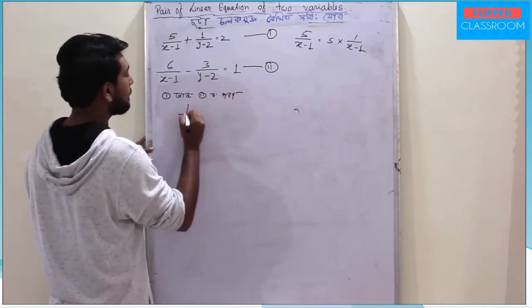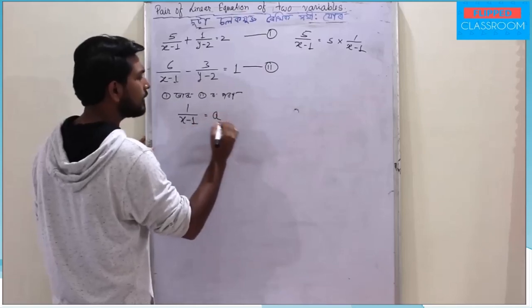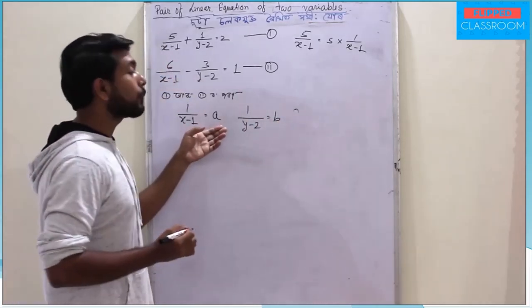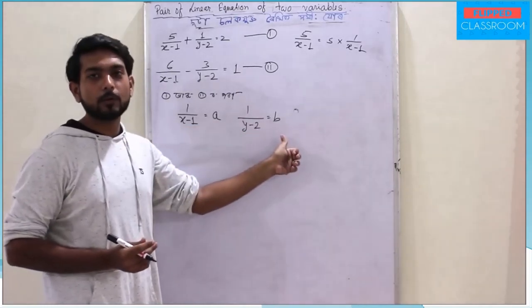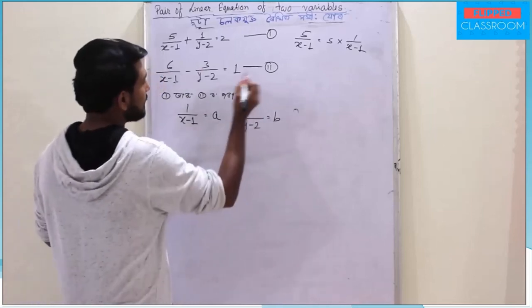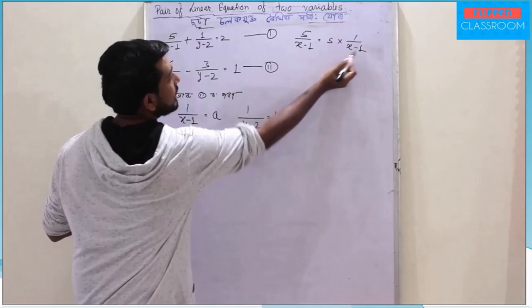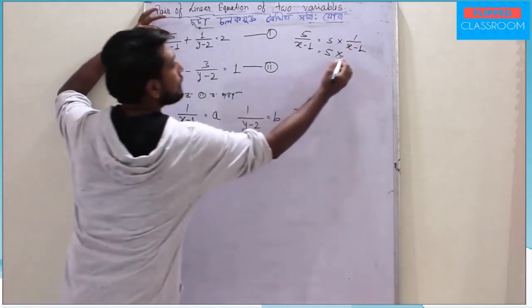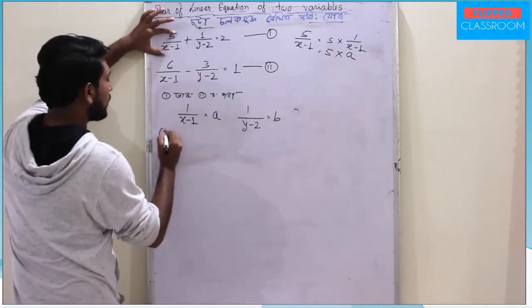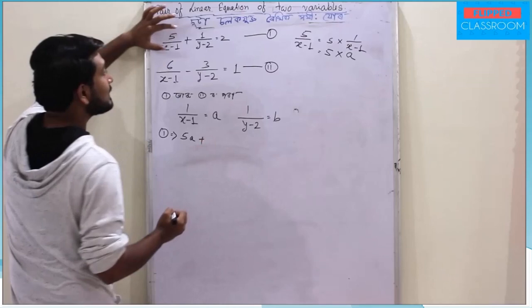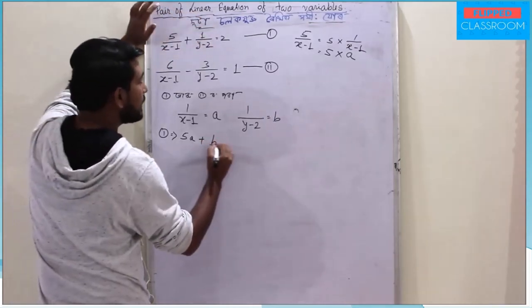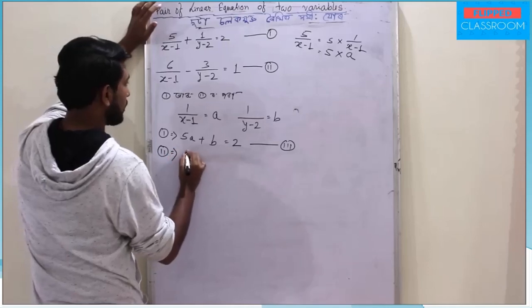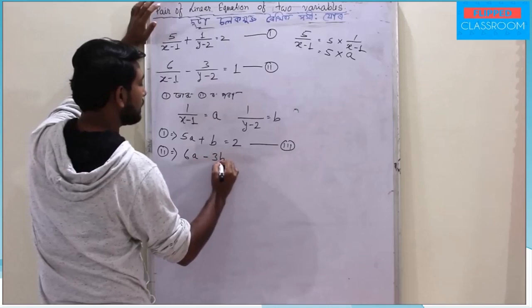I am going to put 1 by x minus 1 equal to a, and 1 by y minus 2 equal to b. So 5 by x minus 1 becomes 5a, and we get 5a plus b equal to 2, and 6a minus 3b equal to 1.